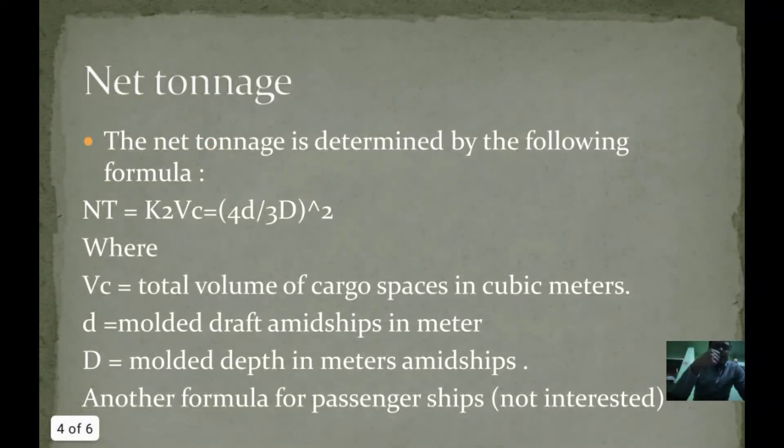Let us see the formula of net tonnage. Net tonnage is equal to K2 Vc, which is equal to 4d divided by 3D whole square, where Vc is total volume of cargo spaces in cubic meters, small d is molded draft amidships in meter, and capital D is molded depth in meters amidships.